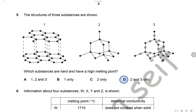Question 5: The structure of three substances are shown. Which substances are hard and have high melting point? The first one is graphite and graphite is soft. The second one is diamond — diamond is hard. The third one is silicon dioxide, which is also hard. So substances two and three are hard with high melting point. The answer is D.